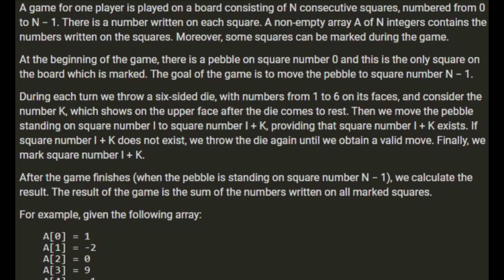The goal of the game is to move the pebble to square number n-1. During each turn we throw a six-sided die with numbers from 1 to 6 on its faces and consider the number k which shows the upper face after the die comes to rest. Then we move the pebble standing on square number i to square number i plus k, providing square number i plus k exists. If square number i plus k does not exist, we throw the die again until we obtain a valid move. Finally, we mark square number i plus k.